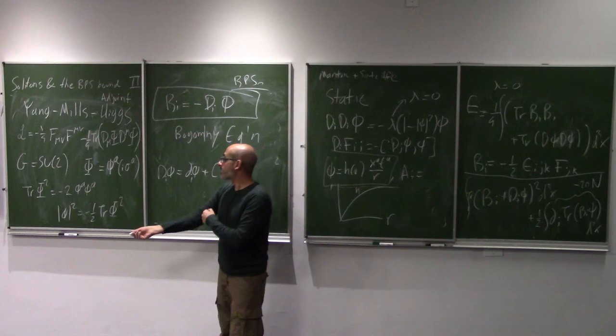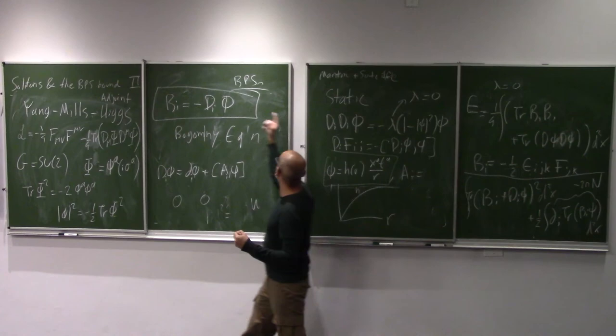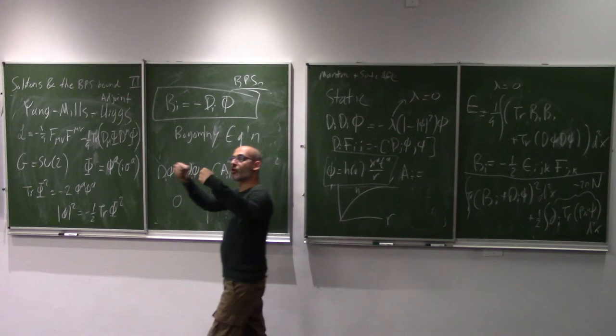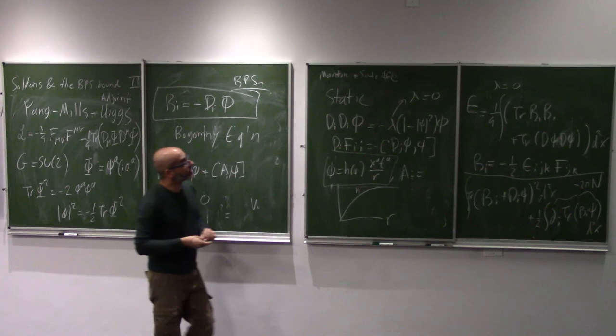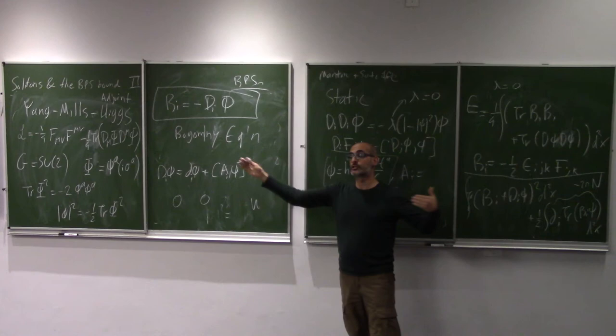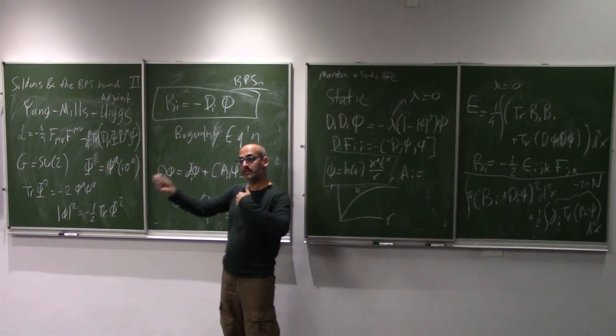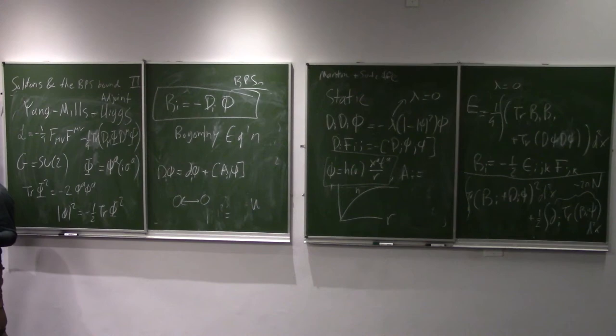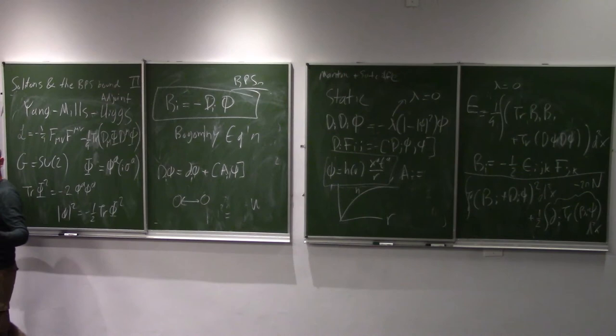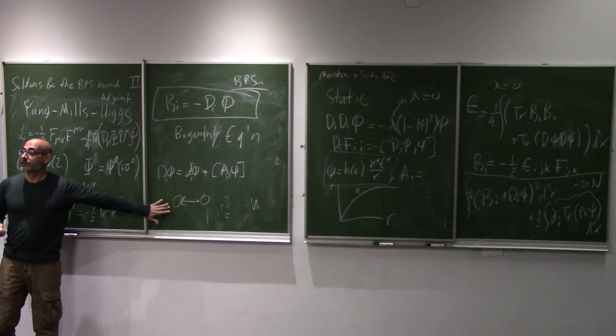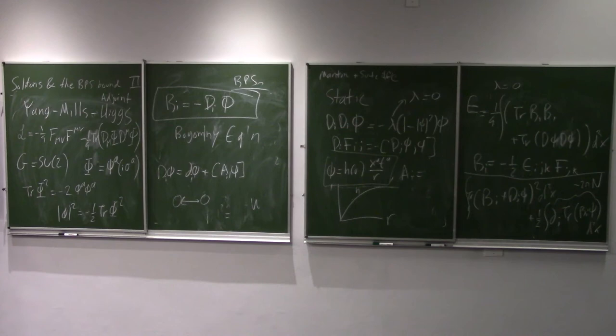Physically, what happens is that these monopoles — if you have two monopoles with λ not zero — would repel each other by the Coulomb interaction, like two north poles. But in the BPS limit where the Higgs field is massless, being a massless scalar field it mediates long-range interactions. The repulsion between them is balanced out by the attraction from the scalar field — scalar fields attract, like gravity. So if you have spin zero or spin two, your interactions are attractive. This balances the repulsive interaction between the two same-direction monopoles.